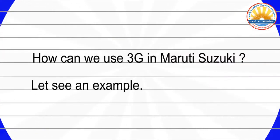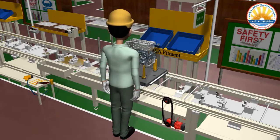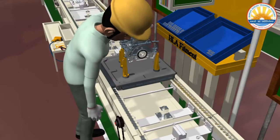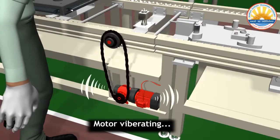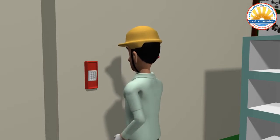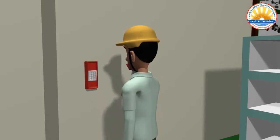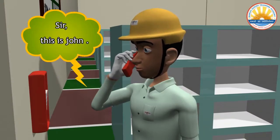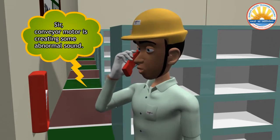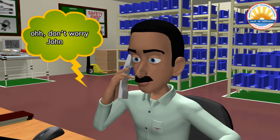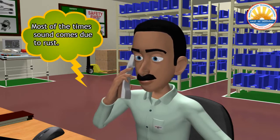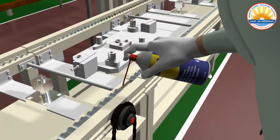How can we use 3G in Maruti Suzuki? Let's see an example. A motor is vibrating. John calls his supervisor: Sir, the conveyor motor is creating some abnormal sound. The supervisor says: Don't worry John, apply oil on the motor chain. This problem is very common. Most of the time the sound comes due to rust. John applies oil.